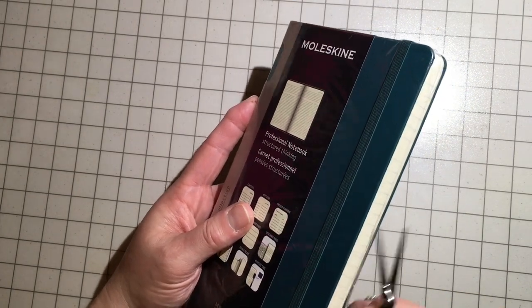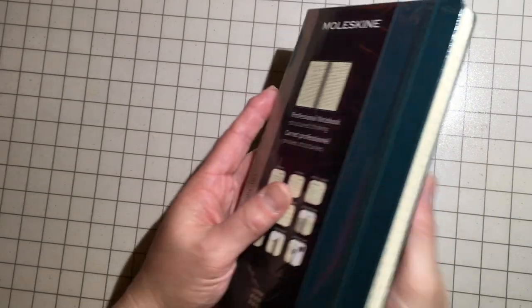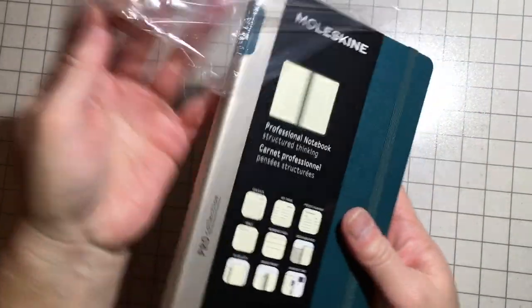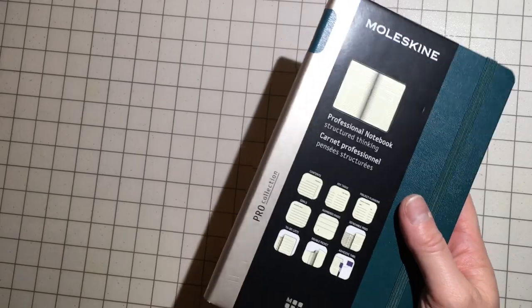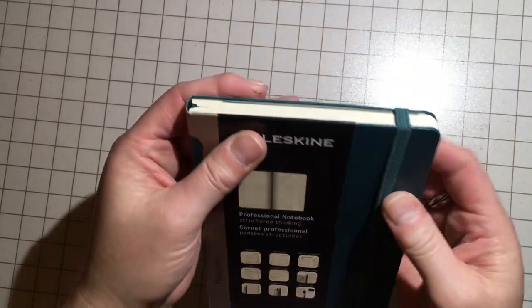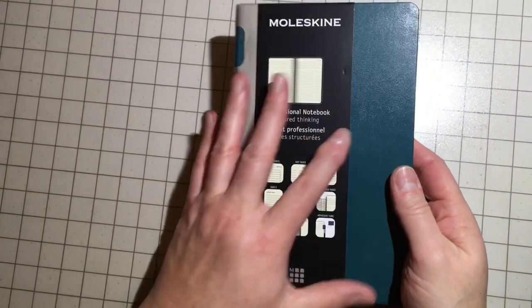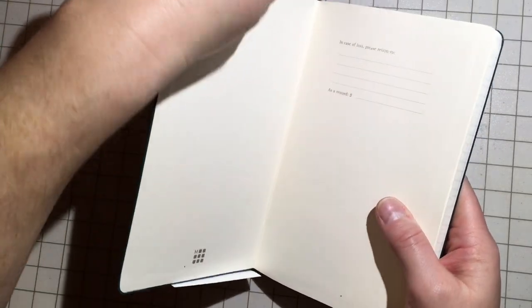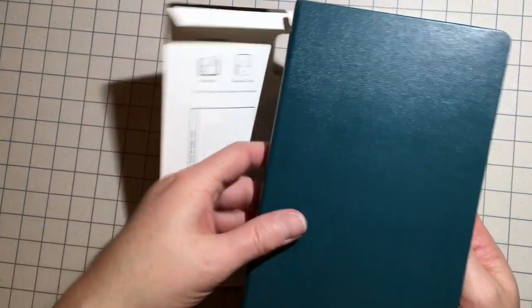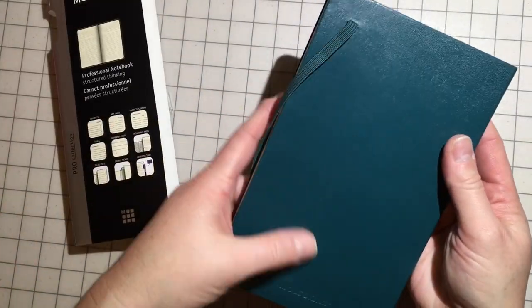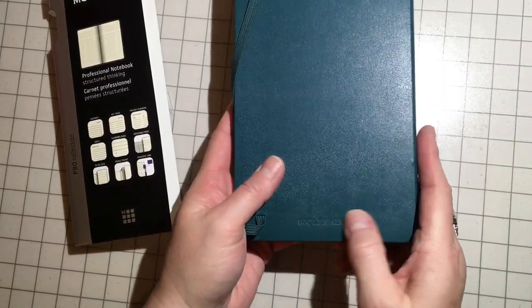So we're going to open this up, and I don't want to damage those pages, so I'm very excited. I do like Moleskine a lot, but the cover is very similar to their other hardbound covers. I'm going to open that and take the cover off. Now it says this is a reusable, this is stuck to the back.